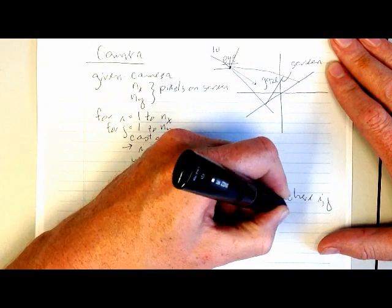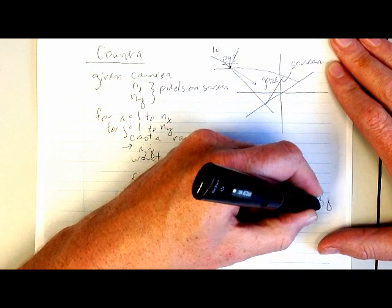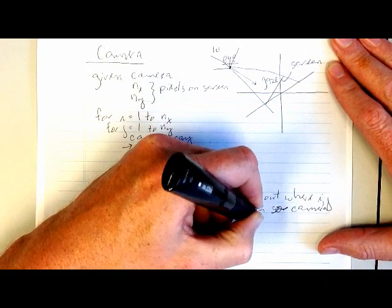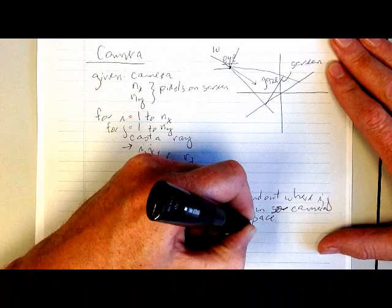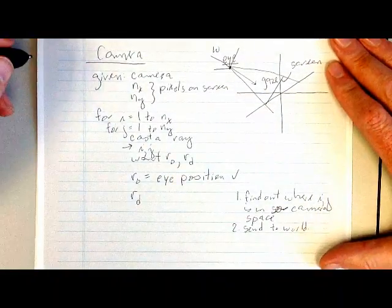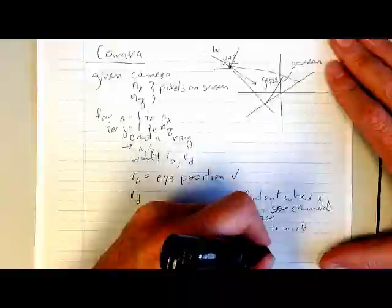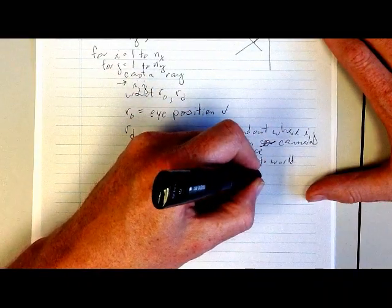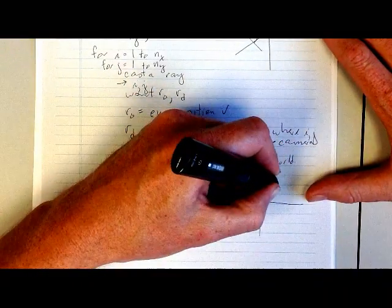So at this point we know i and j and we want the ray origin and the ray direction. Well the ray origin is easy, the ray origin is just the eye. To get the ray direction what we're going to do is first of all we're going to find out where i j is in camera space.